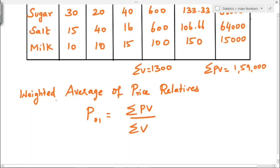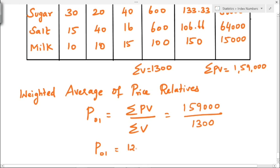Now we find the weighted average of price relatives. The formula is P01 equals summation PV divided by summation V, which equals 159,000 divided by 1300. Dividing gives 122.31. So P01 equals 122.31. This is how we find the value of weighted average of price relatives.